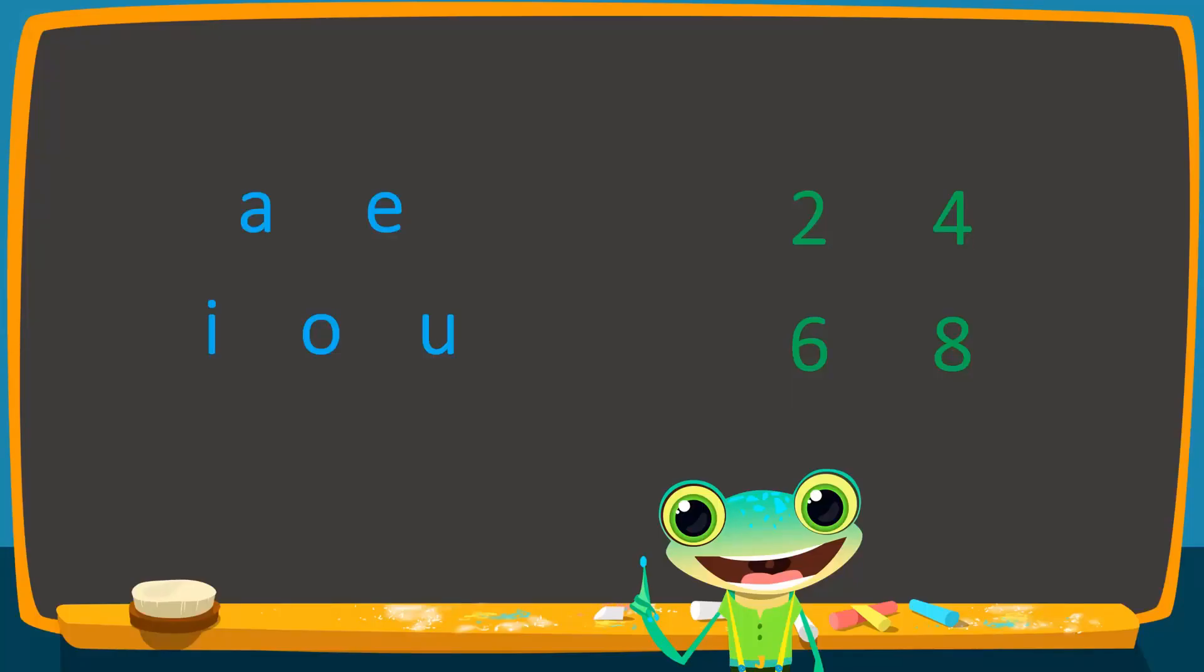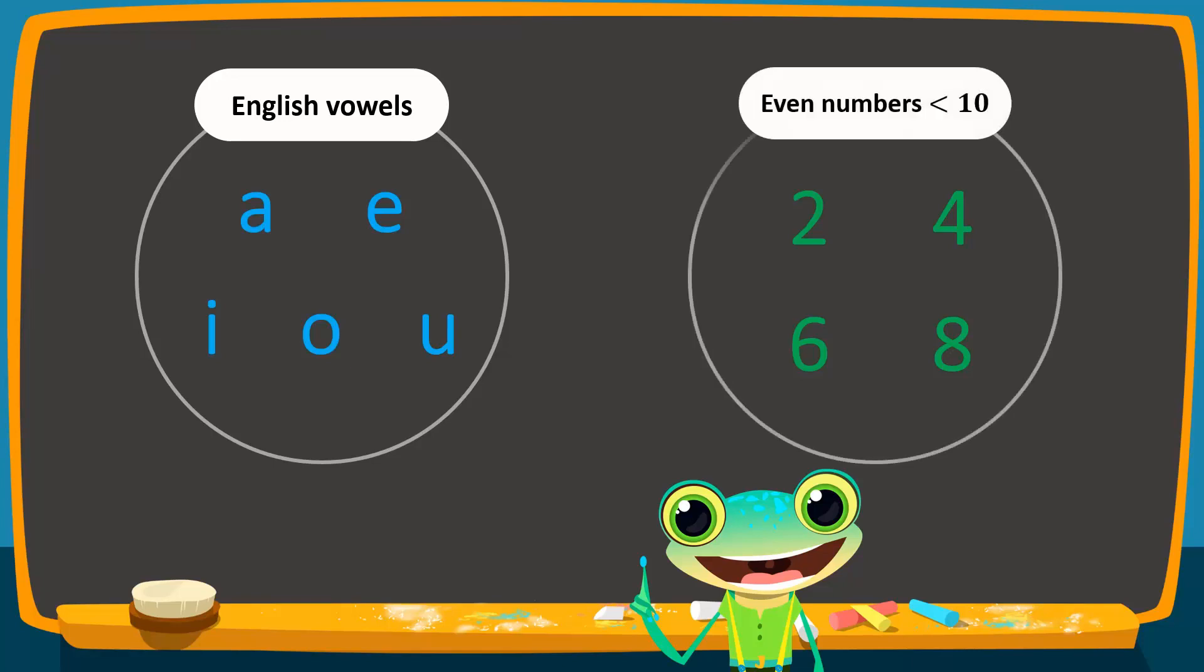Let's take a look at two more examples of sets. The set on the left contains the letters a, e, i, o, and u. Therefore, this is a set of vowels of the English alphabet. On the right, the objects are 2, 4, 6, and 8. Therefore, it is a set of even numbers that are less than 10. Observe that both sets have well-defined properties and every object is distinct.